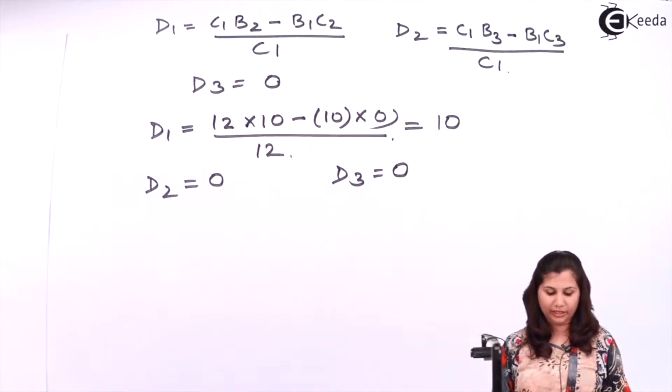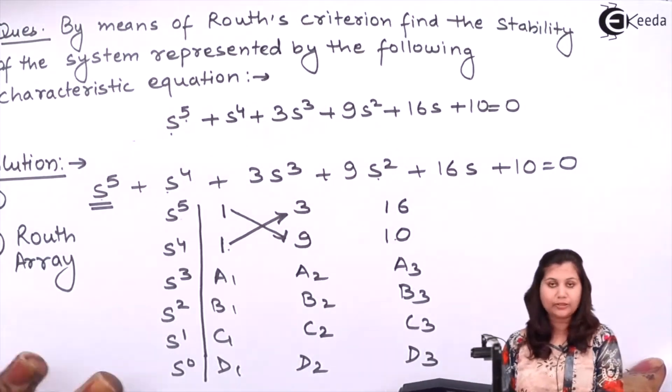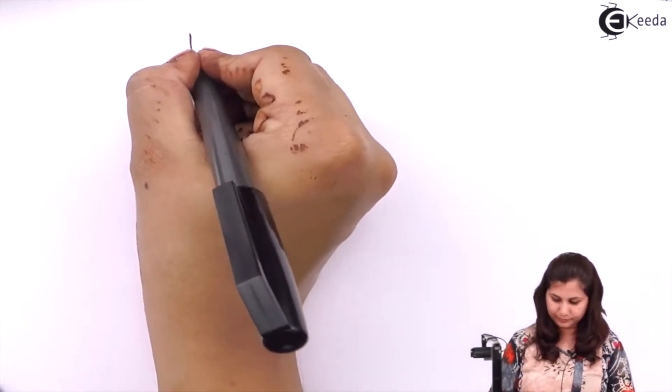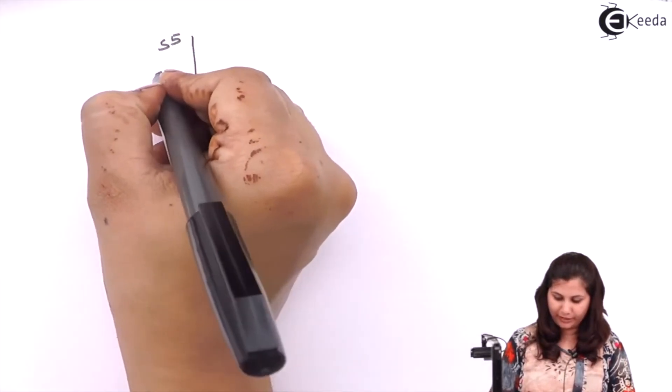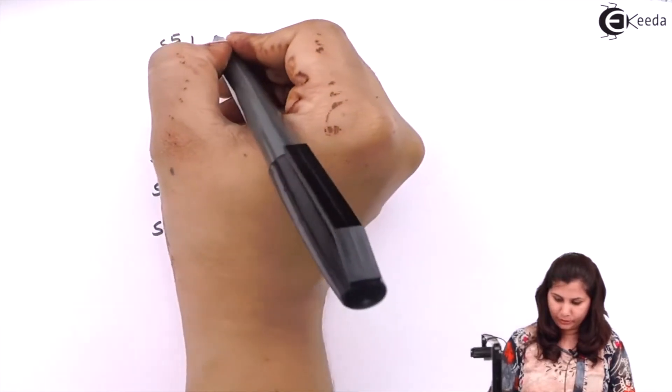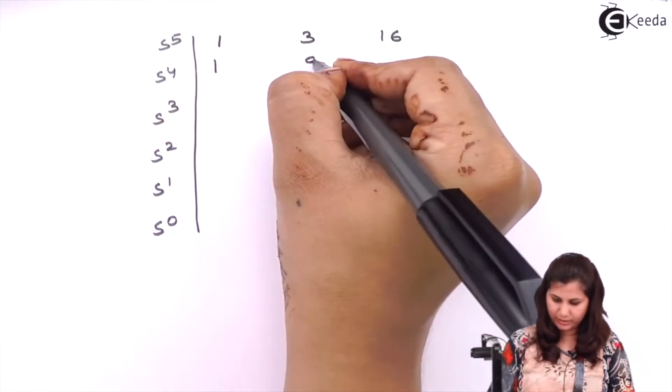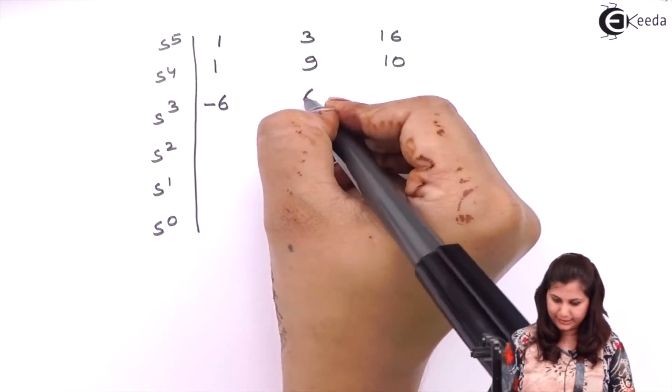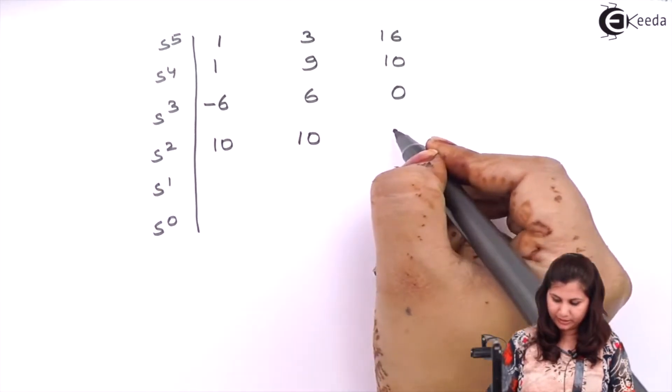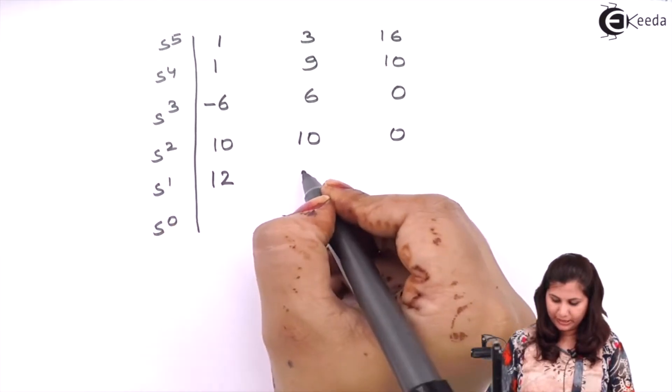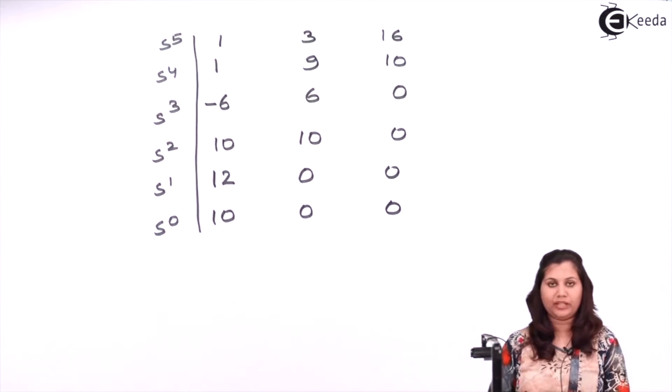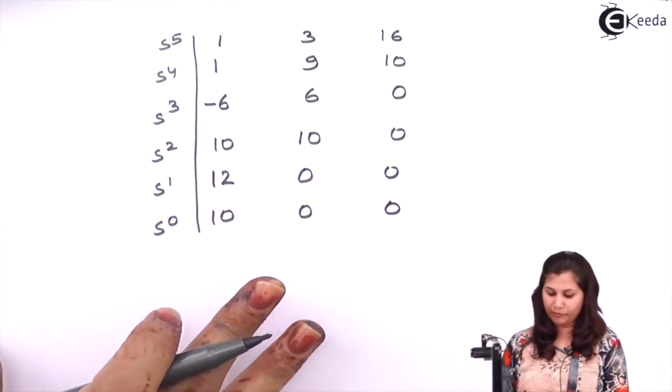Put the values of all the variables in this array. So we will get Routh array as: s to the power 5, 4, 3, 2, 1 and 0. It was 1, 3, 16; 1, 9, 10; then minus 6, 6 and 0. Then b1 was 10, b2 was 10 and here 0. c1 was 12, c2 was 0, c3 was 0. d1 was 10, d2 0, d3 0. So we have put the value of all the variables and we have formed this Routh array.